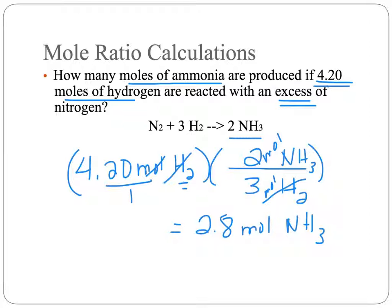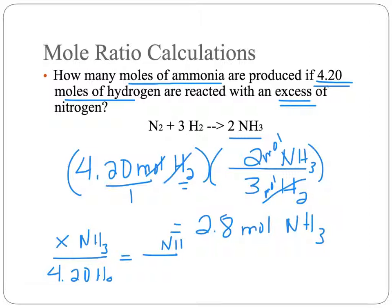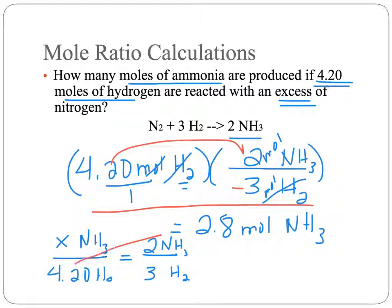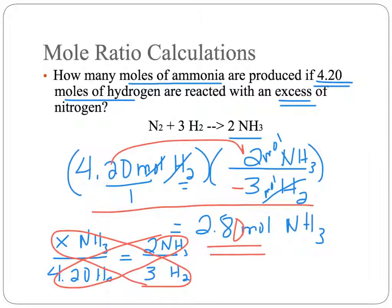Another way to do this is through cross multiplication. If you like setting up proportional fractions and solving that way, it works perfectly fine. You would set up: moles of ammonia over moles of hydrogen equals the mole ratio of 2 to 3. When you cross multiply, you multiply 4.20 by 2 and divide by 3 — the same math. Either mathematical technique gives you the same answer: 2.80 moles of ammonia are produced.